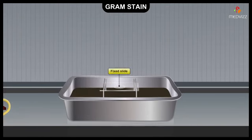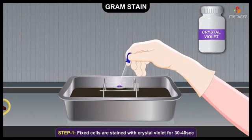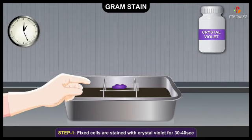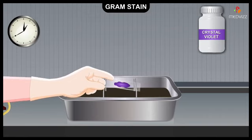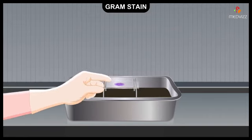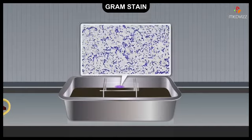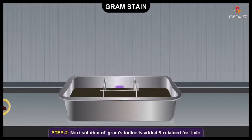The fixed cells are then stained with the basic dye crystal violet for 30 to 40 seconds. The slide is then rinsed with water to remove excess stain. At this point, all cells appear purple under the microscope.